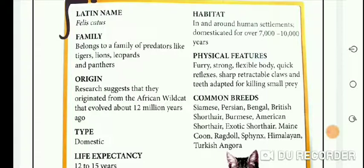Then we have family — cats belong to a family of predators like tigers, lions, leopards, and panthers. And then it talks about origin: research suggests that they originated from the African wild cat that evolved about 12 million years ago.